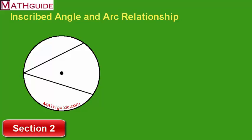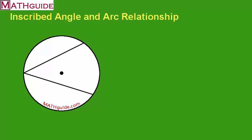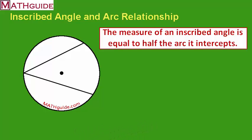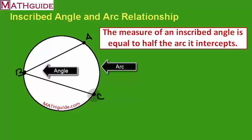Let's talk about the relationship — the specific relationship that ties together the measure of the inscribed angle and its intercepted arc. The relationship says that if we have an inscribed angle, it's equal to half the arc it intercepts. So let's say that this is angle ABC — inscribed angle ABC. Whatever the measure of this arc is, if I divide it by two, that's what this angle is going to be equal to. Just take half of the arc and it's equal to the inscribed angle.